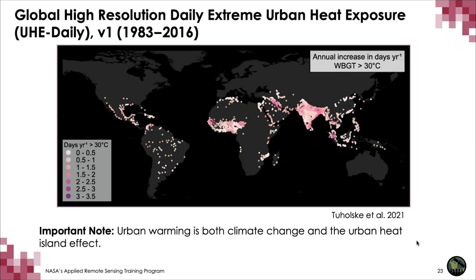With this dataset, we can estimate whether the increase in exposure is driven by population growth or by warming. For many places on the planet, even with global warming, people are moving to cities and thus exposure is increasing. We can also look at just the warming signal and ask, for a given city, how much hotter is it in 2016 than it was in 1983, and what is the annual average rate of change for dangerous hot, humid heat. All the data I'm presenting uses a wet bulb globe temperature daily maximum threshold of 30°C; the dataset also has estimates for 28°C and 32°C.